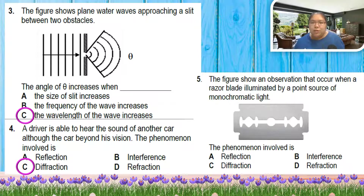Number five: the observation occurs when a razor blade is illuminated by a point source of monochromatic light. What phenomena is this? This phenomena is diffraction.